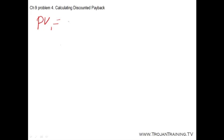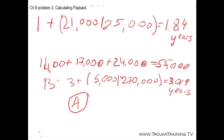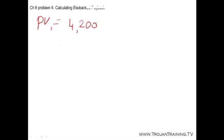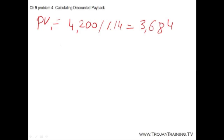The present value of cash flow in year one: we're using the present value formula here. We take the cash flow of the first year divided by one plus the interest rate, so one plus 0.14. That gives us 3,684.21.